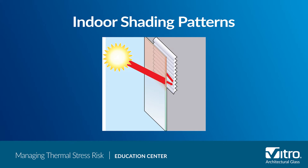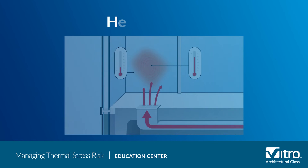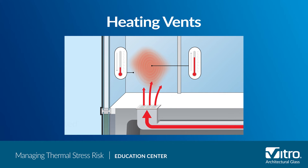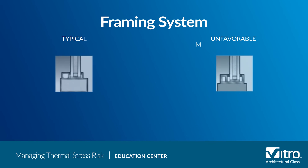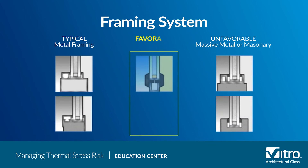Indoor shading devices such as blinds or drapes can also increase the temperature of the glass. This happens when the blind or shade reflects the solar radiation back through the glass, reducing the convection and conduction of heat away from the glass. Similarly, heating vent registers need to be carefully placed to ensure that warm air isn't being directed at the glass.